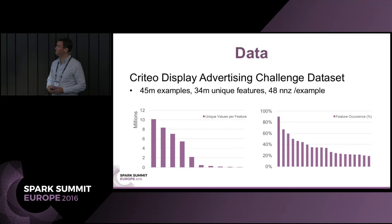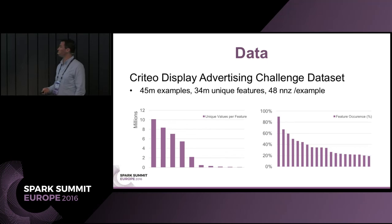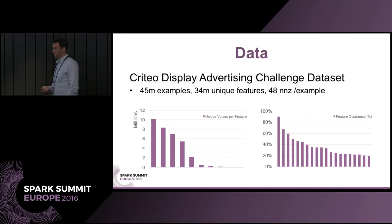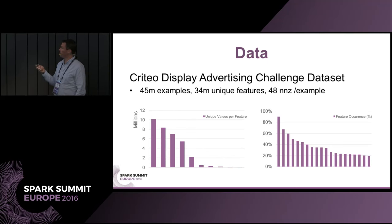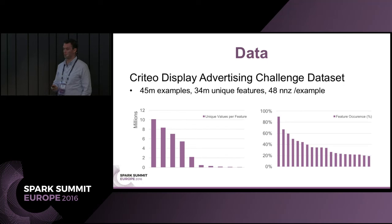For performance comparison, I used the display advertising dataset from the Criteo Kaggle competition. It's large in number of examples, but more interestingly it has 34 million unique features and is highly sparse — approximately 48 non-zero entries per example. It follows a power-law-like distribution common to this sort of data, with a small number of features occurring very often then tailing off quickly. On average per partition, using 48 partitions, only about 4-5% of features are active.